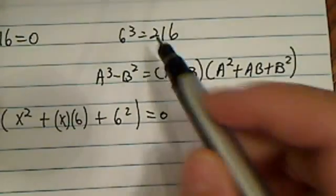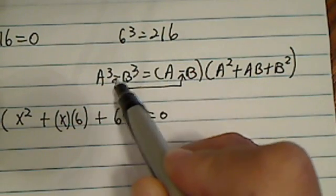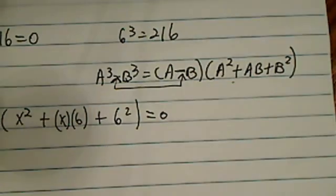A cubic equation, there's a trick for memorizing this. The first sign always follows whatever you have. And then there's always just one negative sign, so this one is a plus sign.